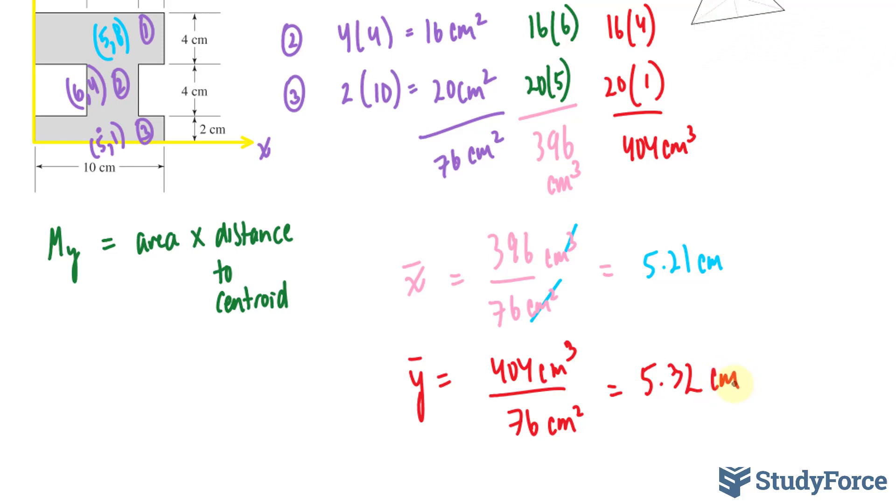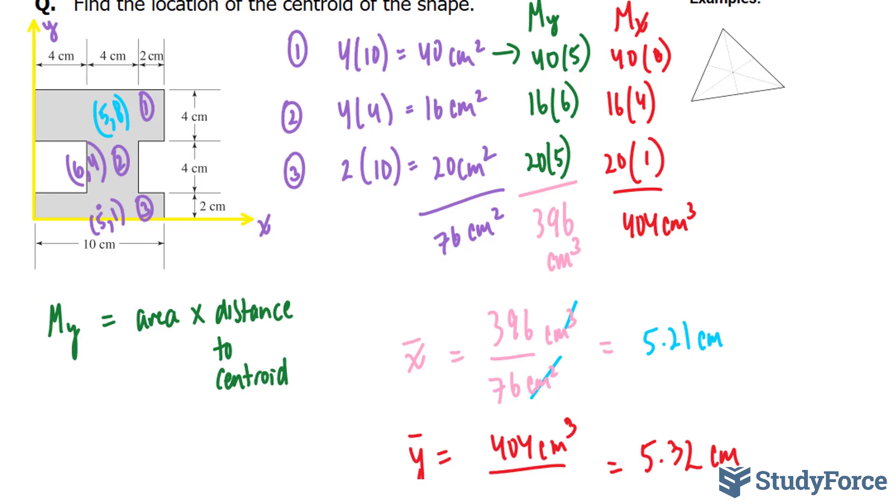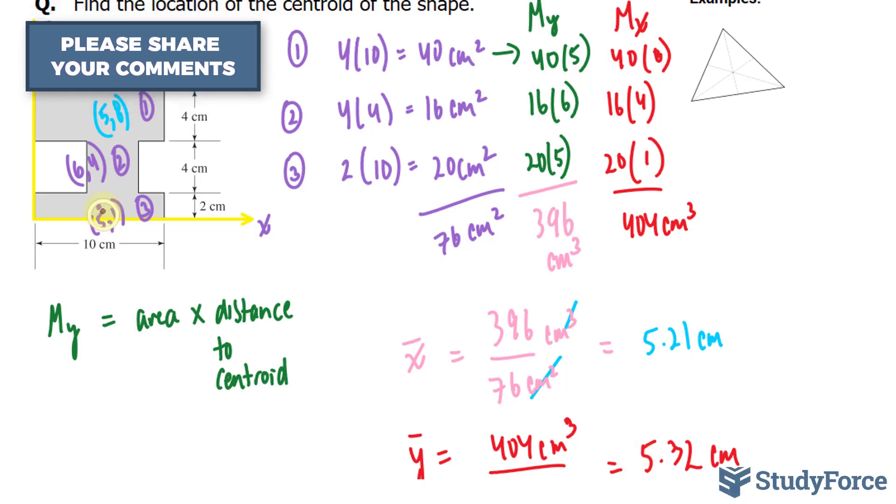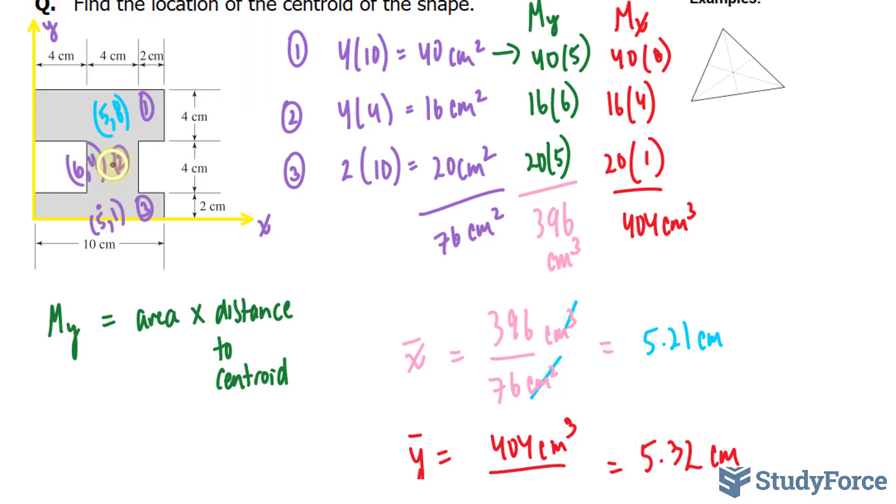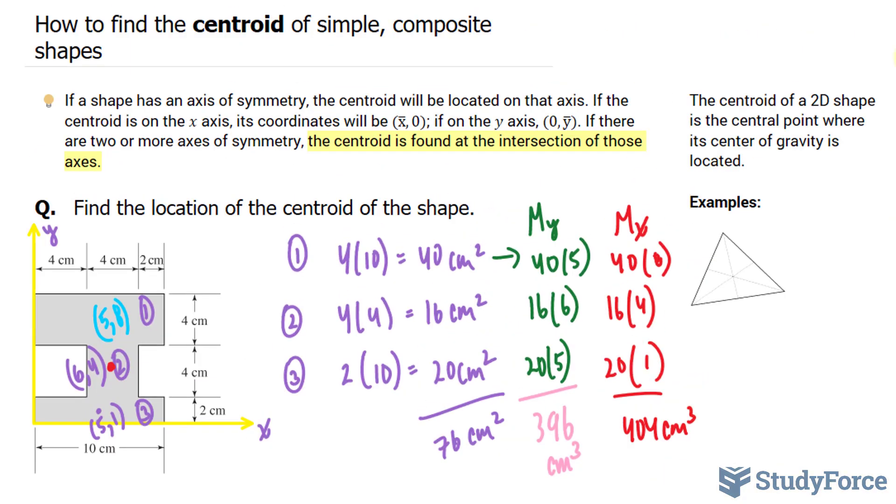So our centroid for this composite figure lies at 5.21 and 5.32. Let's see where that is. That's approximately 5, and up here would be the center of gravity. So there you have it. That is how to find the centroid of simple composite shapes.